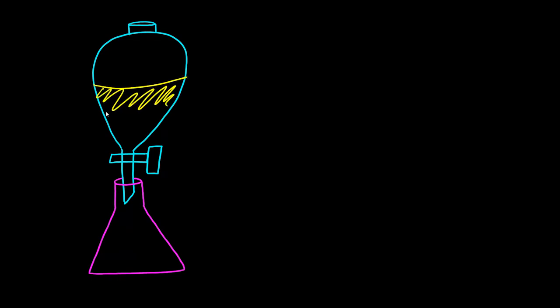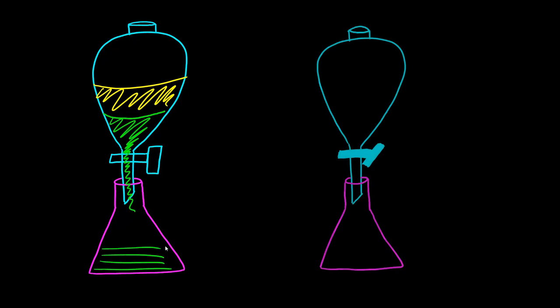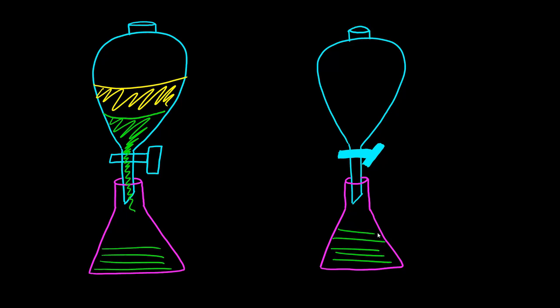But this time, now that the stopcock is open, the aqueous solution can go down the separatory funnel to fill up the flask. And once you've drained all of your aqueous layer into your flask, what you do is you close the stopcock.